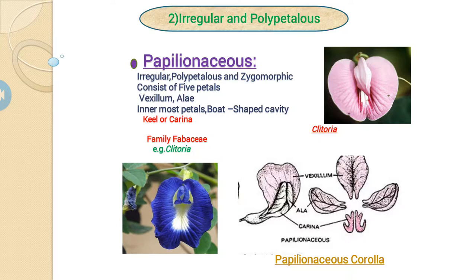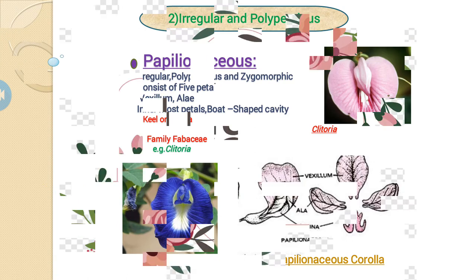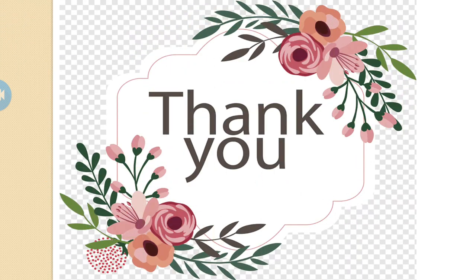For example, the Clitoria plant. This plant structure is a Clitoria plant, and these conditions are formed in the Papilionaceous type of corolla. Vexillum, alae, keel and carina are present in the Papilionaceous corolla. Thank you.